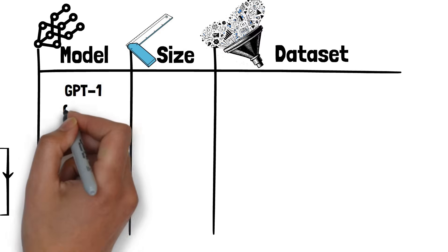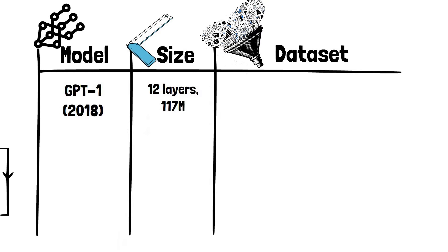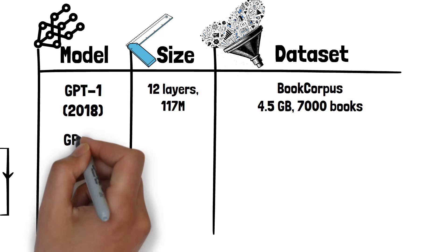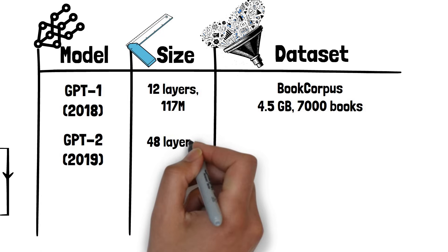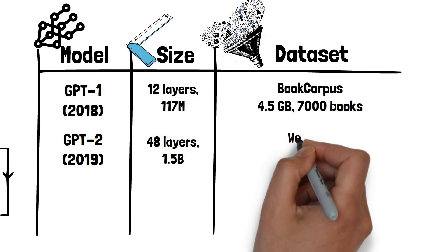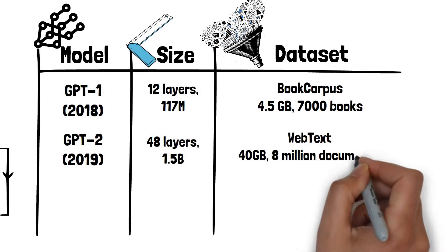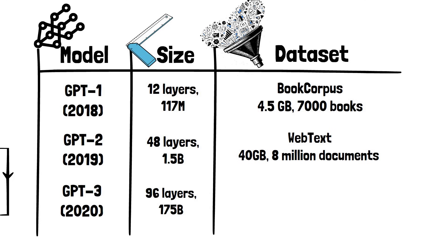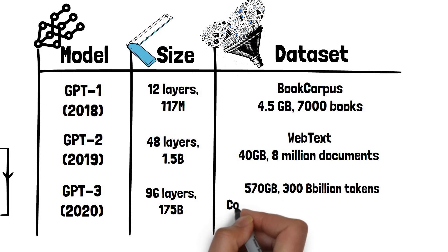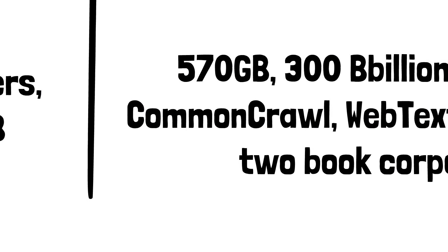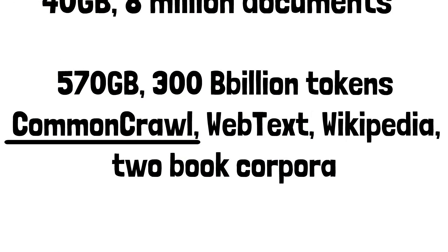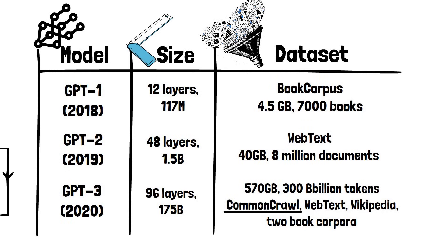For reference, the original GPT-1 model had 12 layers, 117 million parameters, and was pre-trained on a large dataset of books from the internet called Book Corpus. In 2019, OpenAI released GPT-2 with 1.5 billion parameters — ten times the size of GPT-1, trained on ten times as much data. After that came GPT-3, released in 2020, which was the foundation for the release of ChatGPT. GPT-3 had about 175 billion parameters and was pre-trained on a corpus of 500 billion words, mostly from a dataset called Common Crawl, together with Wikipedia articles and books. At the time, this was the largest dataset used to train a model.